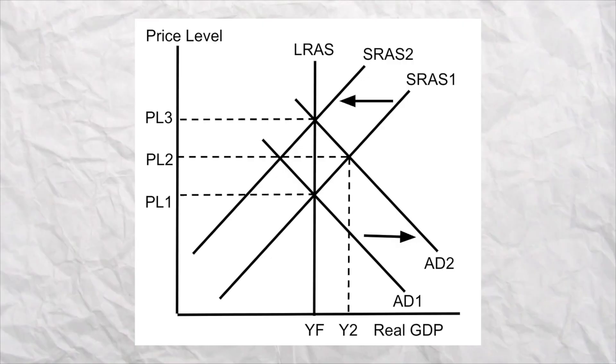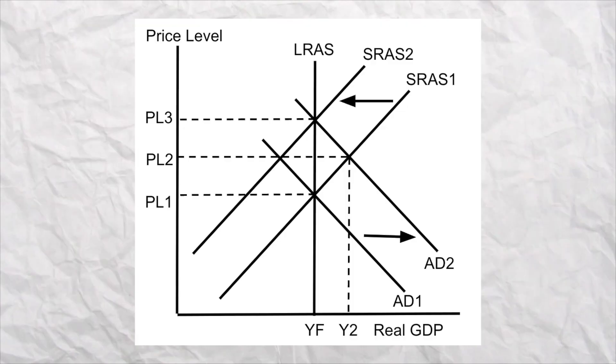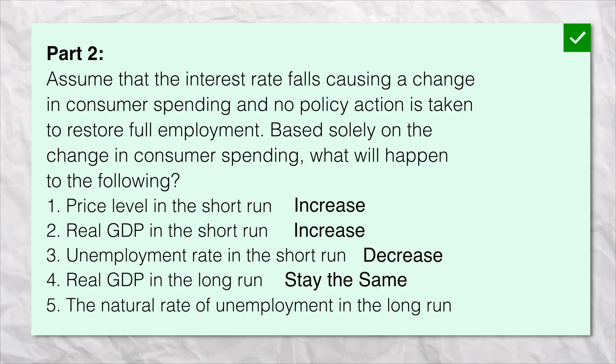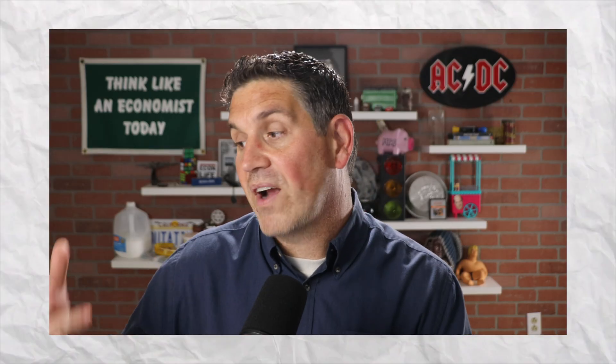Now it says there's no policy action, so in the long run there's going to be a self-adjustment. Because the price level increased, wages and resource prices will eventually also increase, which will decrease the short-run aggregate supply, putting us back at full employment. So the answer to question four — what's going to happen to real GDP in the long run? It's going to stay the same. For number five, the natural rate of unemployment is also going to stay the same. Remember, the natural rate of unemployment is based on frictional and structural unemployment, and neither of those are going to change with this example.